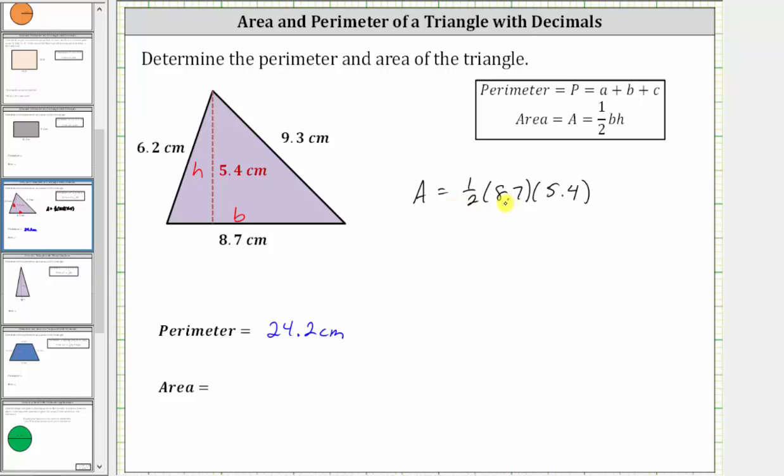If it's helpful, we can write 1/2 as a decimal. 1/2 is equal to 5 tenths, or 0.5. So the area is also equal to 0.5 times 8.7 times 5.4.